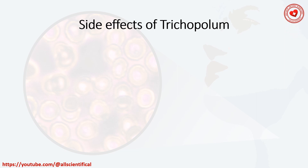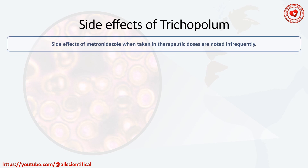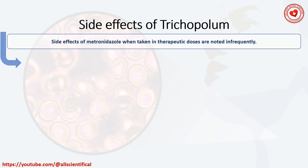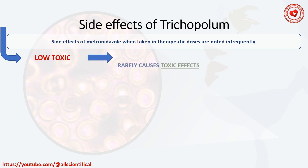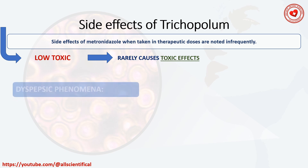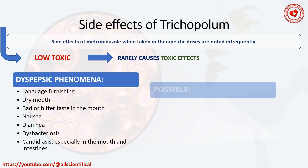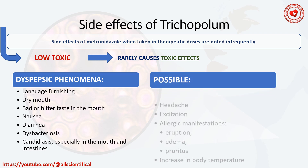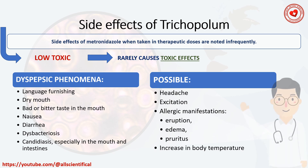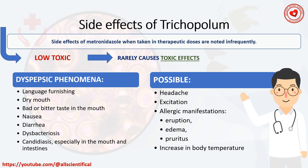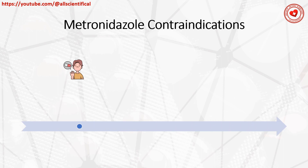Side effects of metronidazole when taken at therapeutic doses are not infrequent but it has low toxicity and rarely causes severe toxic effects. With significant dosage, the following may be observed: tongue thickening, dry mouth, unpleasant or bitter taste, nausea, diarrhea — often due to dysbacteriosis from destruction of anaerobic flora — and may contribute to candidiasis in the mouth or intestines. Possible headache, excitation, allergic phenomena including rash, swelling, skin itching, and increased body temperature.